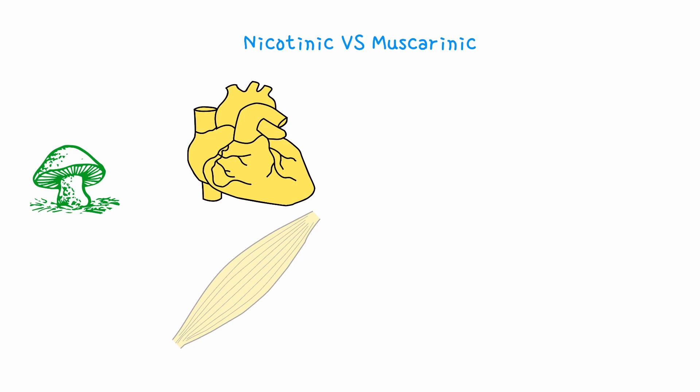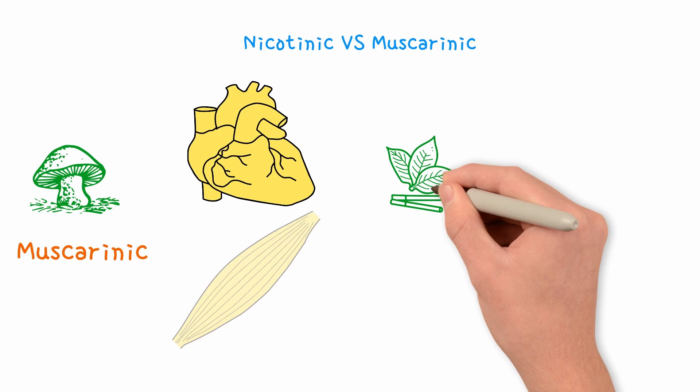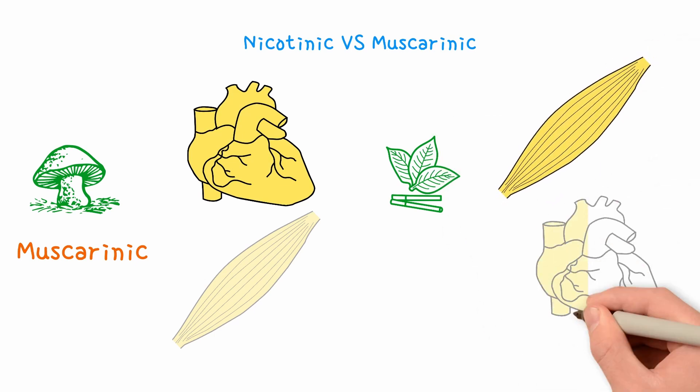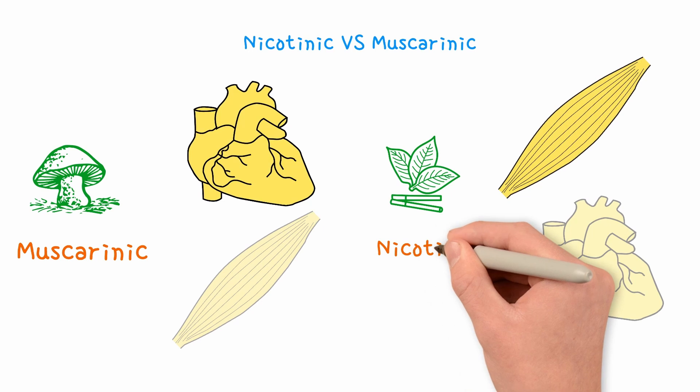So, receptors at the end organs were labeled muscarinic. In contrast, nicotine stimulated the ganglia and skeletal muscle, but ignored the heart. So, receptors at the ganglia and muscles were labeled nicotinic.